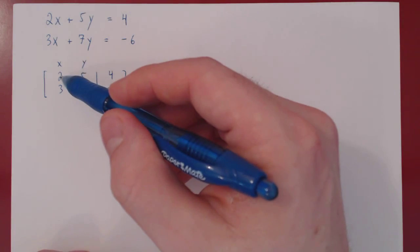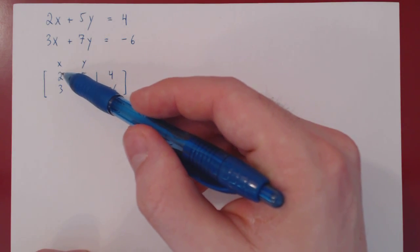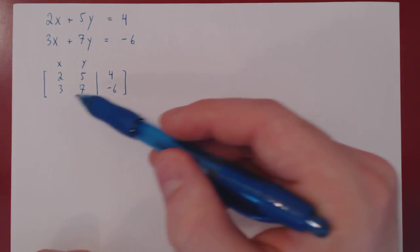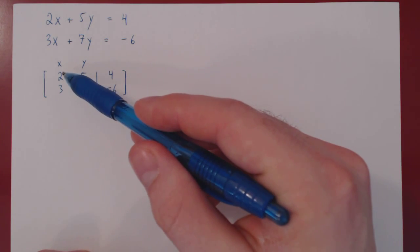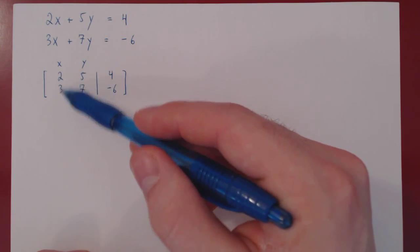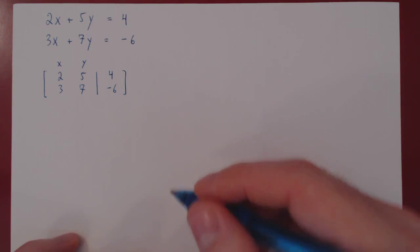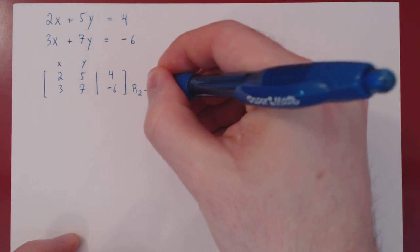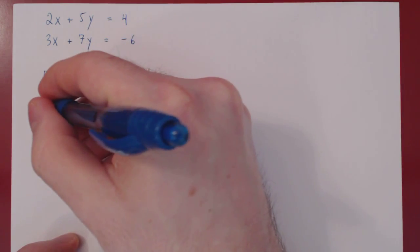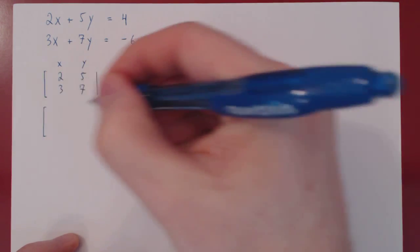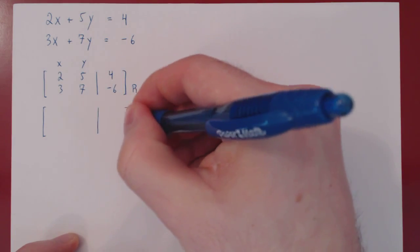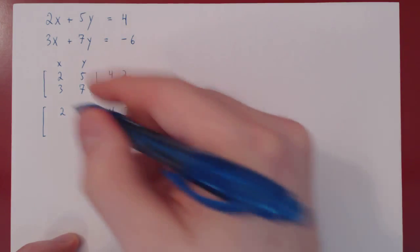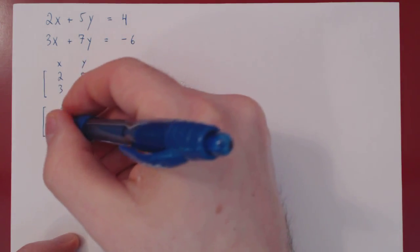There are two natural ways: we could do row one minus row two and then negate row one, or we could do row two minus row one and then swap row two and row one. Let's do this — so let's do row two minus row one. So three minus two is one.